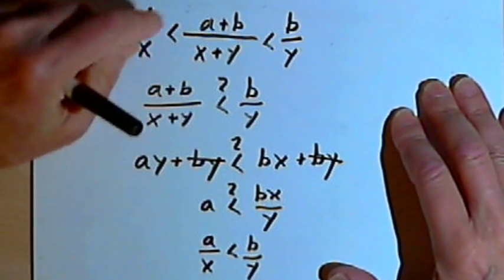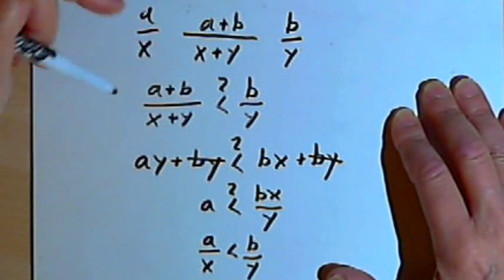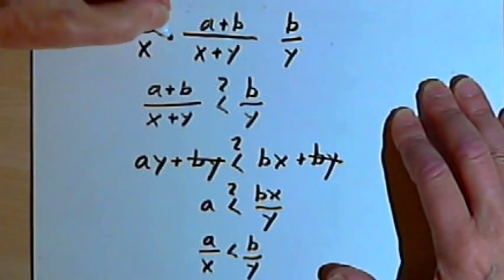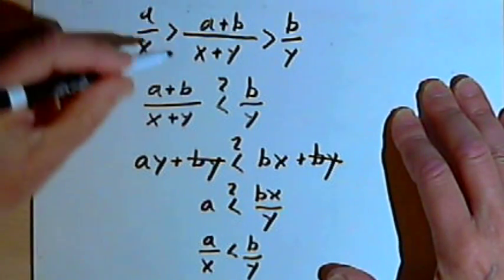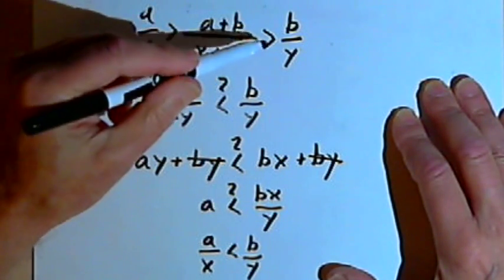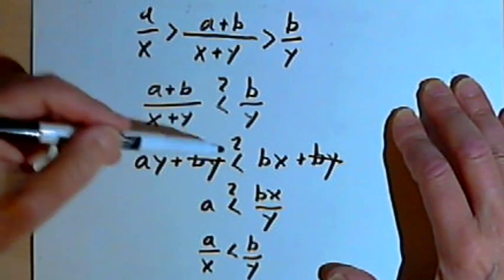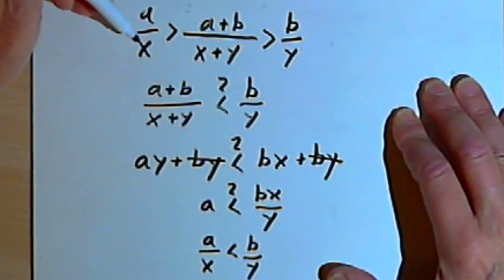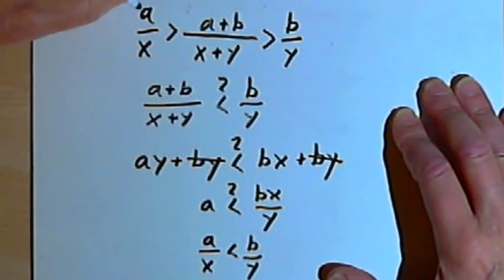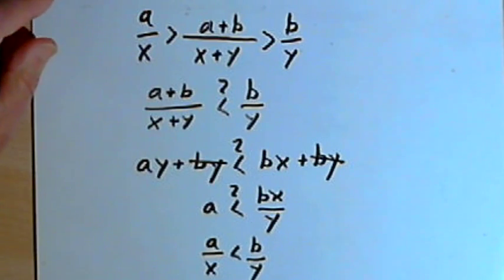Just in case you wondered what would happen if a over x was greater than b over y, I would just put greater-than signs in here. The proof works out exactly the same — just with signs going in the other direction. So I hope that helps. Take care, I'll see you next time.